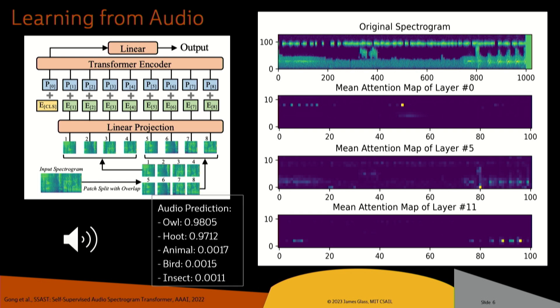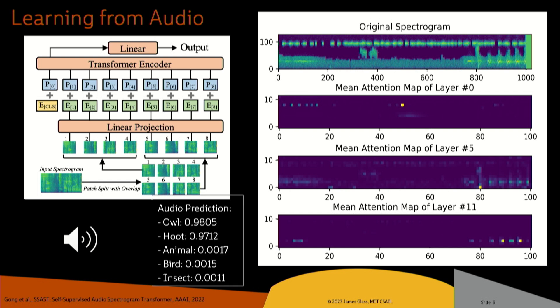Okay, you have an idea? This is what the model thought it was — it primarily picked out the owl. If you look on the right-hand side, at the top is a spectrogram where you hear the crickets and the owl hooting. At the very bottom is an attention map, and you can see the model is mostly paying attention to the owl, which is why it gave it the highest priority.